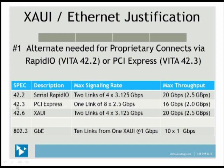If we look at PCI Express — Vita 42.3 — you've got one link of eight lanes at 2.5 gigabits per second, giving you 16 gigabits per second or 2 gigabytes per second. With XAUI, we've got two links, each consisting of four lanes at 3.125 gigabits per second, giving us 20 gigabits per second or 2.5 gigabytes per second. When XAUI is connected to a switch, it can output 10 lanes of one gigabit per second Ethernet — so from one XAUI port you can get 10 one-gigabit Ethernet links.